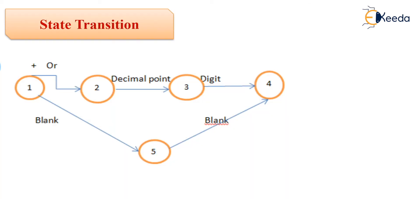Now, the next step — you see the state transition diagram, where the number of states is mentioned as five. In your state machine diagram you have a final state with a double circle, but since this is a state transition diagram, the state transition is moving from one state to another with some event cause. For example, state one moves to state two with the event of plus or OR — whenever the compiler encounters a plus, OR sign, or the word, it will change its state.